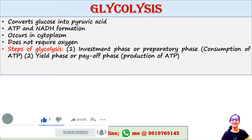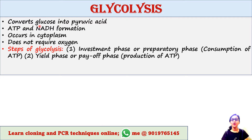Glycolysis is a pathway that converts glucose into pyruvic acid, and the free energy released in this process is used to form ATP and NADH. Glycolysis occurs in the cytoplasm of all cells of our body, and it does not require oxygen.